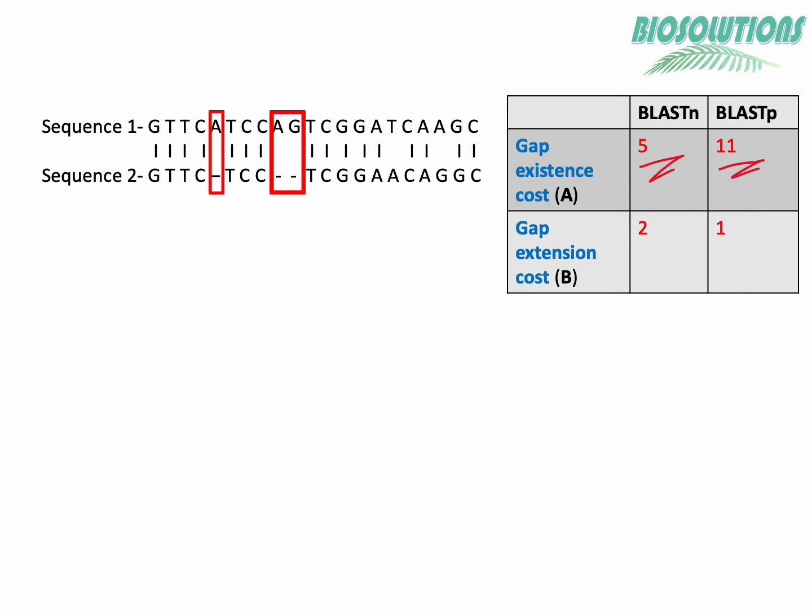We can use the formula using the values for A and B. We take these values from BLAST additional parameters. The default penalty for the presence or existence of a gap, or A value, are 5 for BLASTn, which is nucleotide to nucleotide alignment, and 11 for BLASTp, which is protein to protein alignment. Whereas the default penalty for extension of a gap, or B value, for BLASTn it is 2, and for BLASTp it is 1.